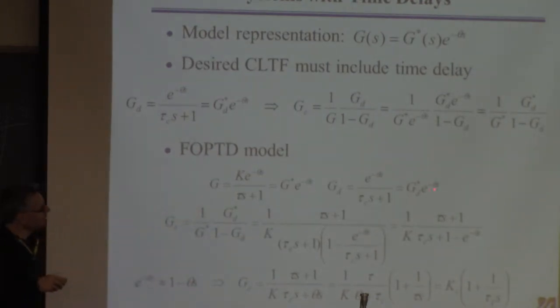Here's our desired closed-loop transfer function. We admit we have to include a time delay in it. So we have 1 over (tau_C * s + 1), that's this, multiplied by that time delay. Just factoring these into the part without the delay and the delay for both of these.